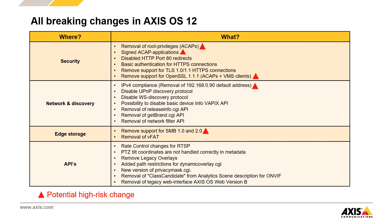As a behavioral change, we're going to remove the beloved default IP address that we had for so long in our products. And lastly, we think that the removal of the insecure SMB1 and SMB2 versions for network shares needs to be considered carefully when upgrading to Access OS 12, as in the worst case scenario, the Access device will stop recording.